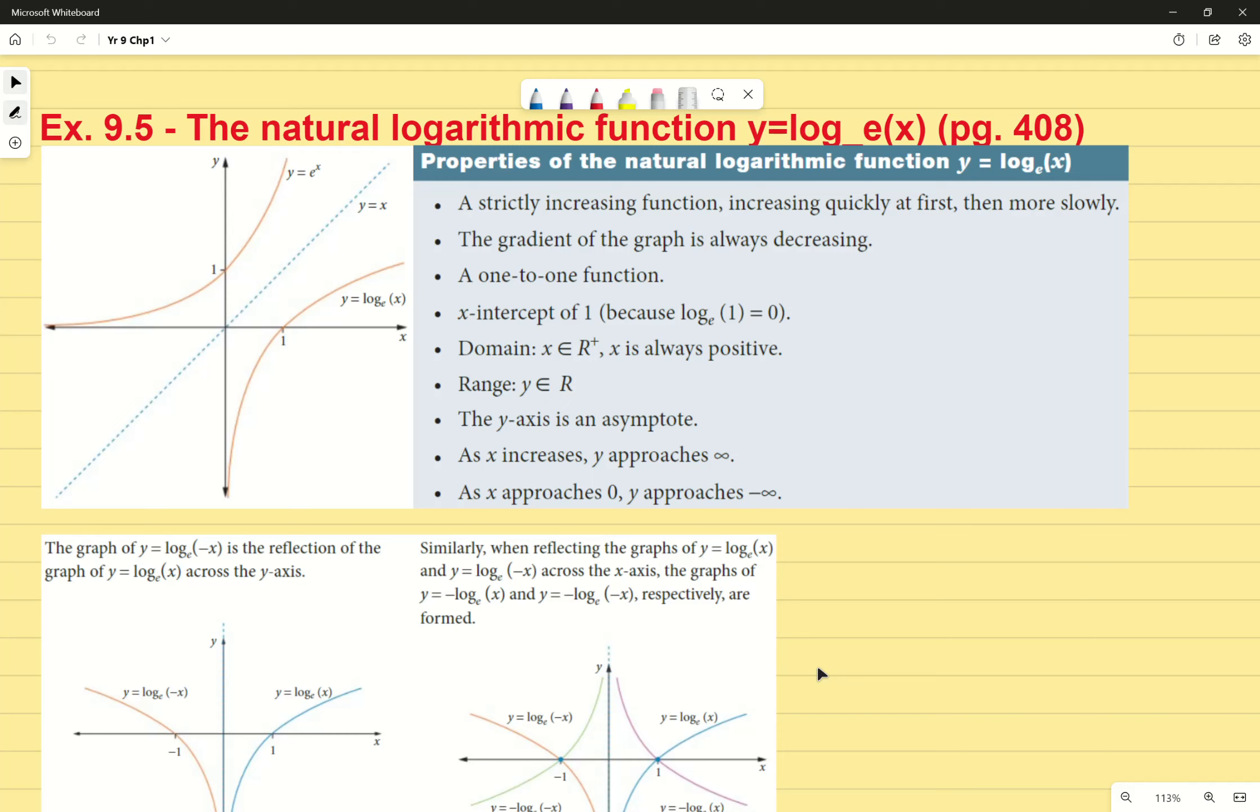This introduction to exercise 9.5 on the natural logarithmic function y equals log base e of x, starting on page 408 of your textbook. A couple of properties of log base e of x, or the natural logarithmic function - of course it is the inverse of e to the power of x. So we're applying Euler's number, and later on when we do the differentiation of logarithmic functions, specifically the natural one, you'll notice it has a very unique differentiation as well.